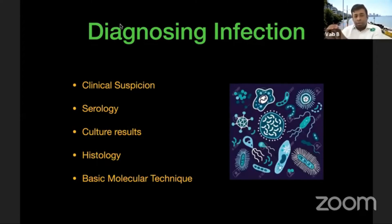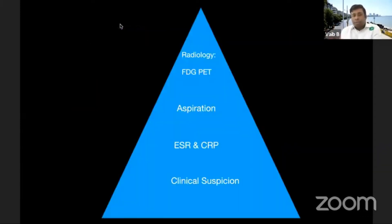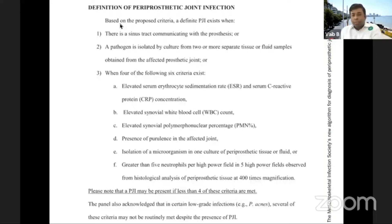We diagnose infection on clinical suspicion, serology, culture results, histology, and some basic molecular techniques. If you look at this diagnostic pyramid, the first step is suspicion — if a patient presents with pain and discomfort in a previously well-functioning hip, that should raise suspicion. Then we proceed to basic investigations like ESR and CRP, then aspiration, and if still confused, radiological tools especially the PET scan, which provides objectivity to an otherwise subjective diagnosis.